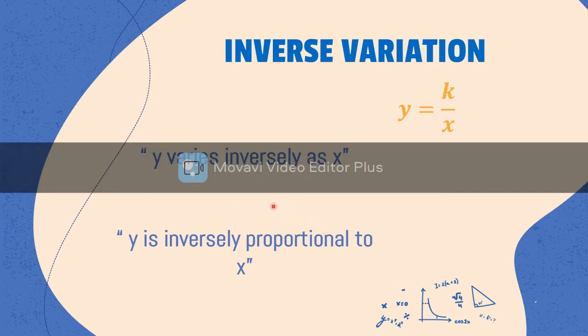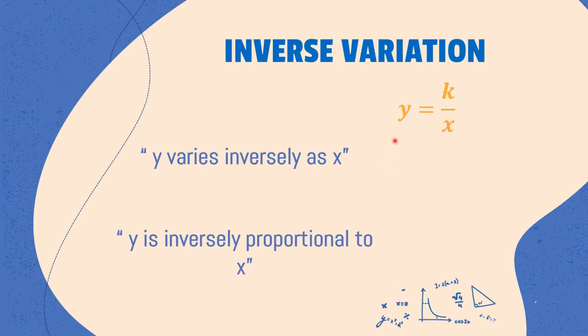Whatever the first variable mentioned in our variation, which is y, this is isolated on one side. On one side is equal to k divided by x. So, the second variable mentioned, which is x, will be divided into k.